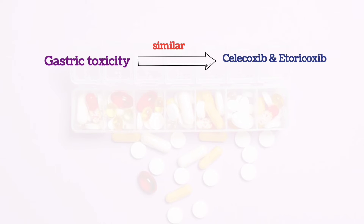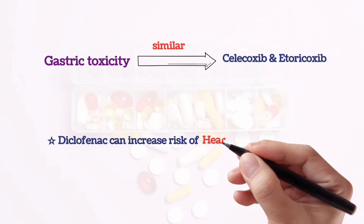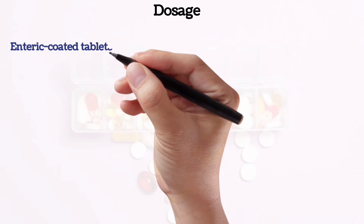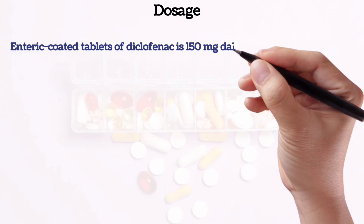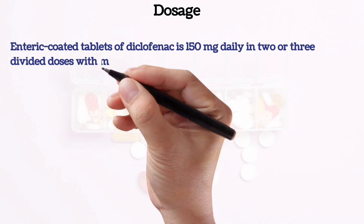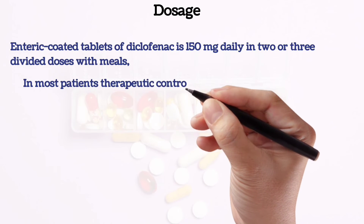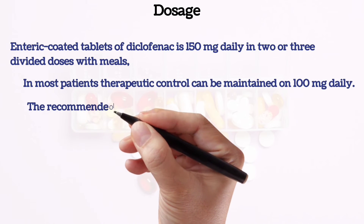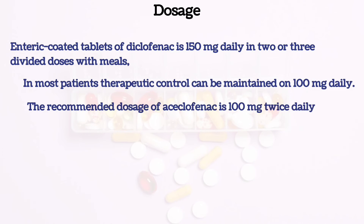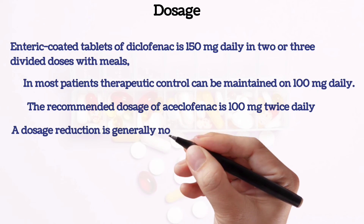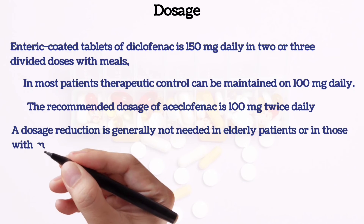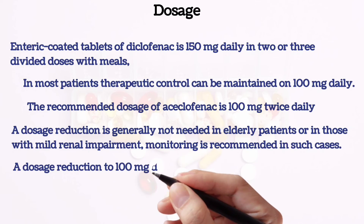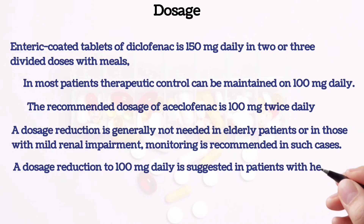Like many NSAIDs, diclofenac can increase the risk of heart attack and stroke. Dosage: The initial dosage of conventional or enteric-coated tablets of diclofenac is 150 mg daily in two or three divided doses with meals, and in most patients therapeutic control can be maintained on 100 mg daily. The recommended dosage of aceclofenac is 100 mg twice daily. Though a dosage reduction is generally not needed in elderly patients or in those with mild renal impairment, monitoring is recommended in such cases. A dosage reduction to 100 mg daily is suggested in patients with hepatic impairment.